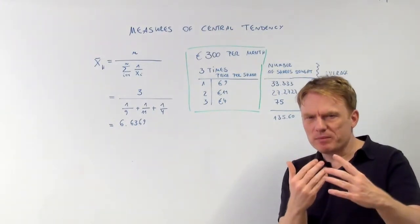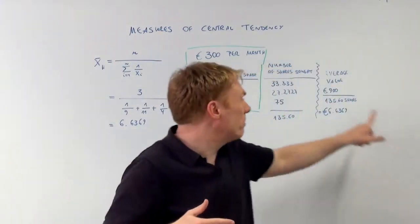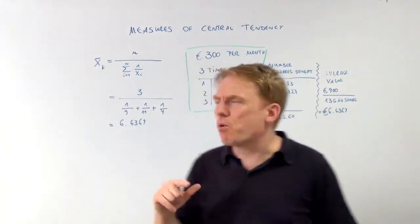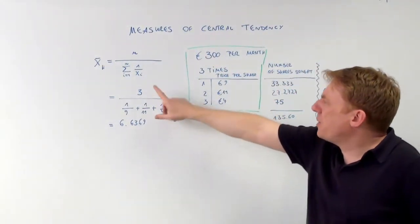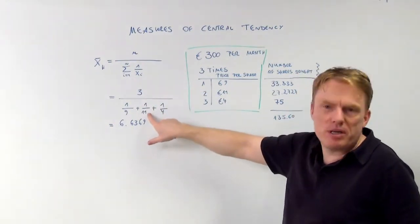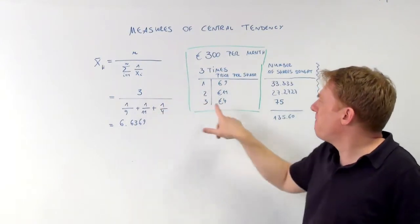Between 4 and 11 there is an average value that we need to calculate, and the answer is of course going to be 6.64. So 3 divided by 1 divided by 9 plus 1 divided by 11 plus 1 divided by 4.